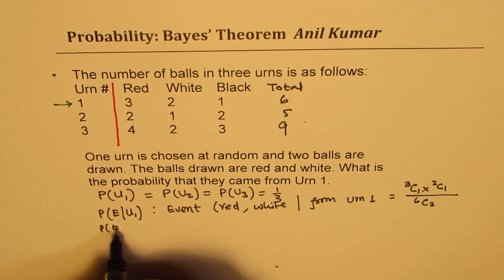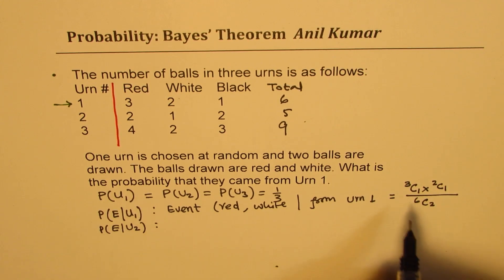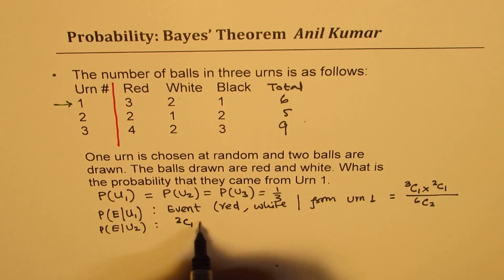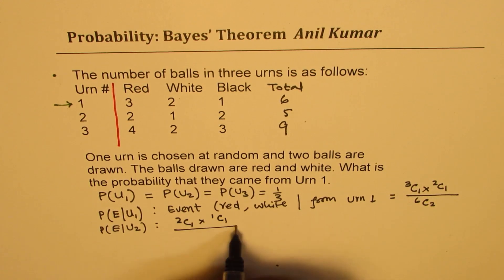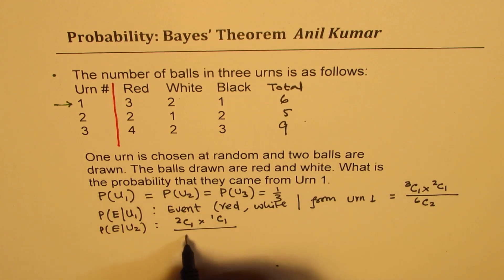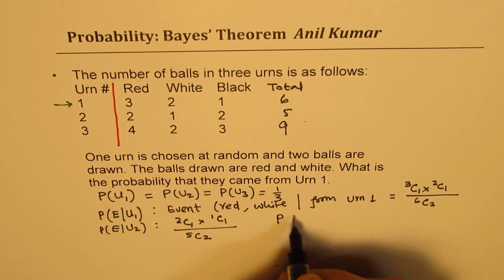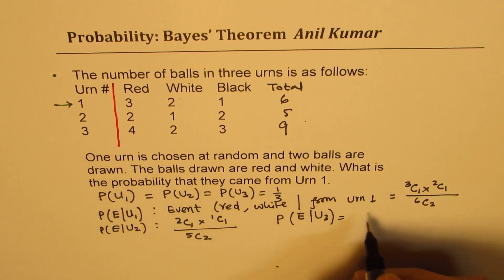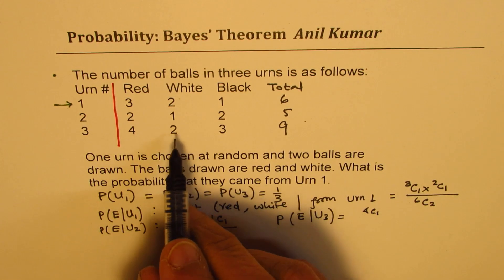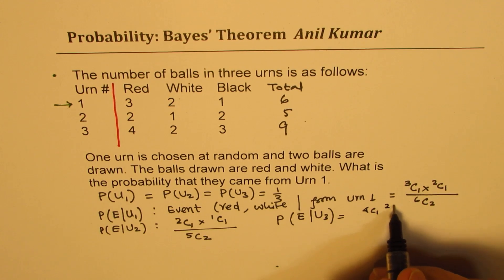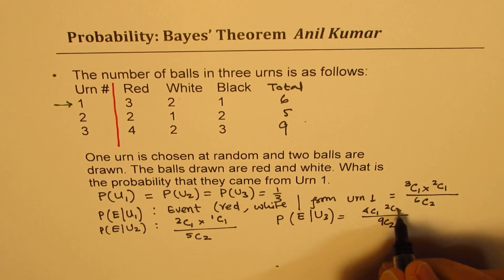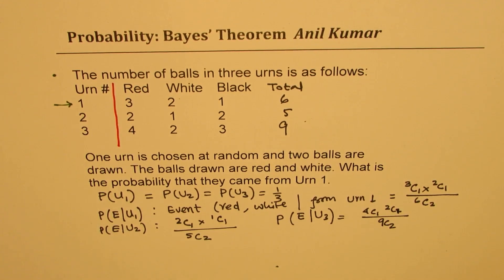Similarly, the probability for picking from the second urn will be what? So from the second one, so out of two, one red ball times one out of one, and we have total five in this case, and we are picking up two. And the probability of picking up red and white from the third urn is, there are four here, so 4c1 times white is two, so 2c1 divided by, total is nine, so 9c2.